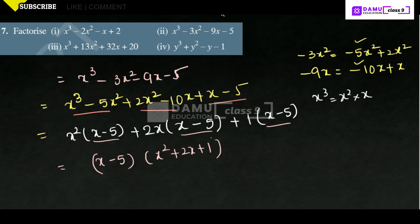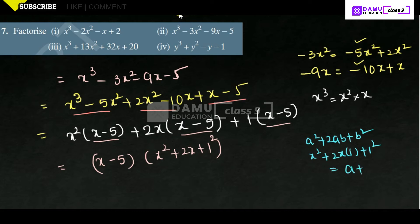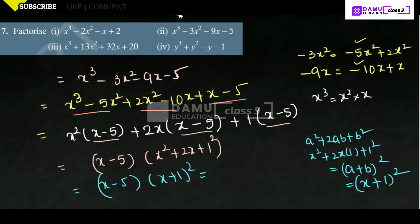Here, x² + 2x + 1: you can write 1 in the format of 1². So using a² + 2ab + b² = (a + b)², here a² is x², 2 into x into b will be 1, plus 1² — that is (a + b)², so x + 1 whole square. So the factorization is x - 5 into (x + 1)², which is x - 5 into (x + 1)(x + 1).